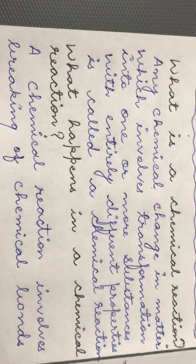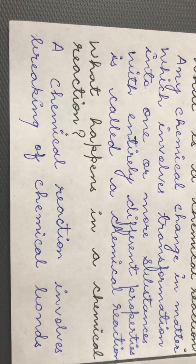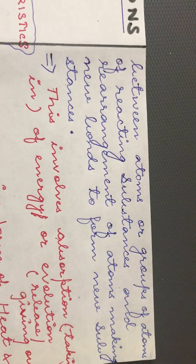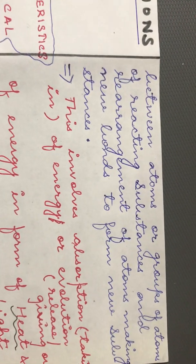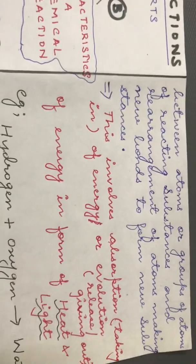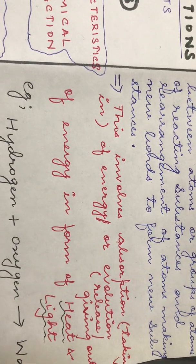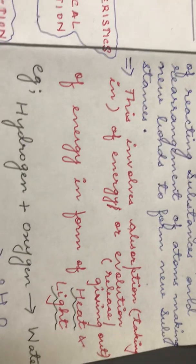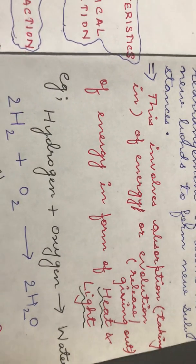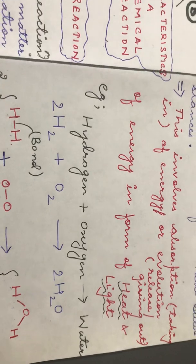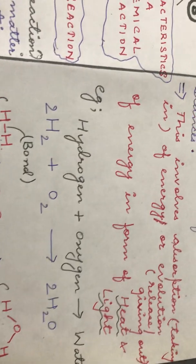What happens in a chemical reaction? A chemical reaction involves breaking of chemical bonds between atoms or groups of atoms of reacting substances, and rearrangement of atoms making new bonds to form new substances. This involves absorption — that is, taking in — of energy, or evolution — that is, release or giving out — of energy in the form of heat or light. To illustrate this, we take a simple example of hydrogen and oxygen combining to form water.